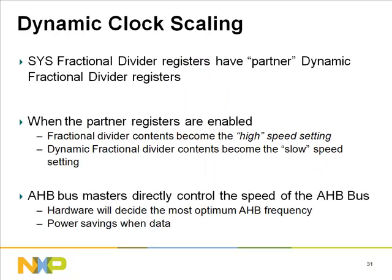Key features of dynamic clock scaling: when partner registers are enabled, fractional divider contents become the high-speed settings and dynamic fractional divider contents become the slow-speed settings. This allows hardware — mostly the AHB bus masters — to directly control AHB bus speed. Hardware decides the most optimum AHB frequency automatically, so software engineers don't need to manually optimize. Fast clocks are only used when data needs to be transferred, minimizing power when idle.